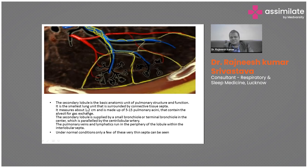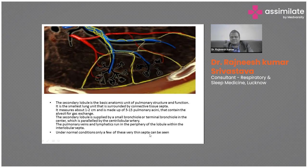The secondary pulmonary lobule contains a central bronchiole and arteriole in its center. In the periphery there is a septum containing lymphatics and veins. So the center of the lobule contains airways and arteries, while the periphery contains veins and lymphatics. Anything affecting airways or arteries will produce abnormalities in the center of the lobule, while conditions affecting veins or lymphatics will produce abnormalities in the septa or periphery. These thin septa are normally not visible on HRCT but become prominent in diseased states like ILD.